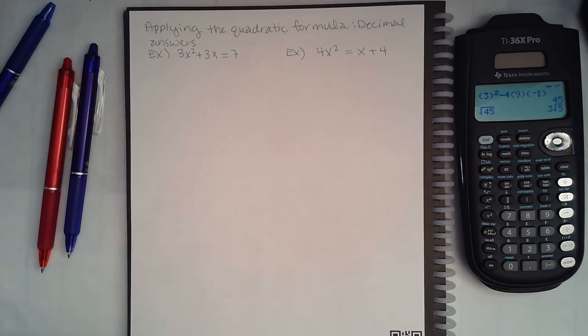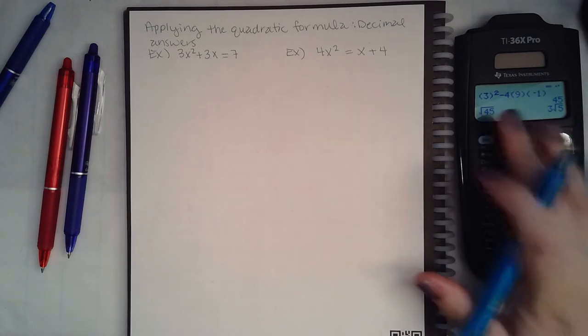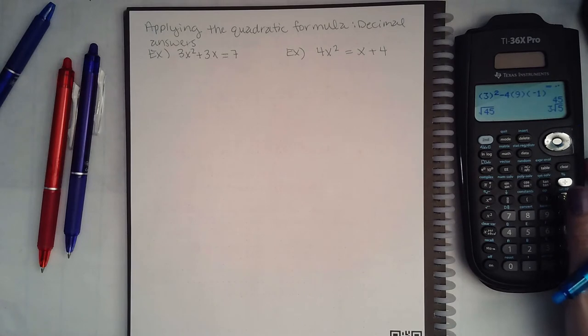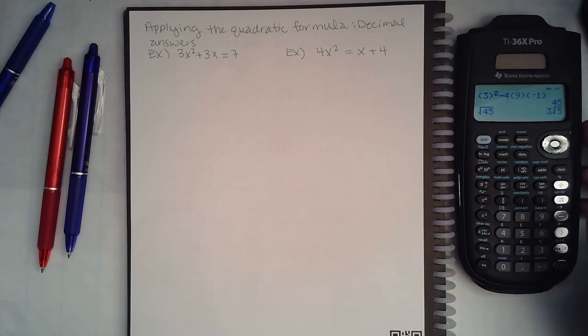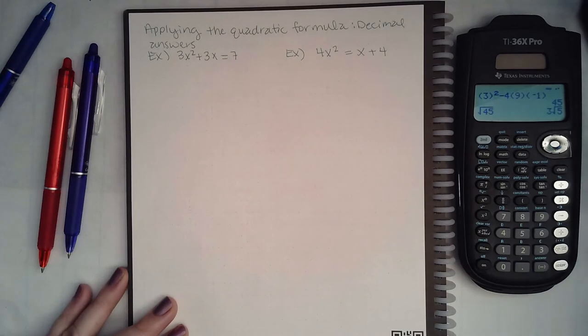In this case, once we plug everything into the radical, if they want decimal answers I am totally allowed to plug everything into my calculator and it will spit out the decimal value. You just have to be careful with what you type in there.